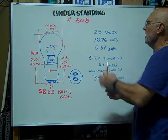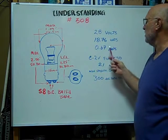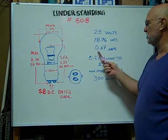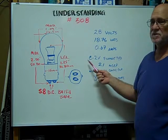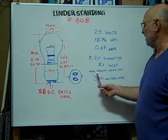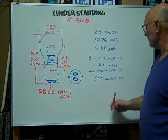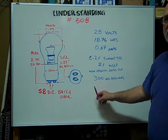The volts are rated at 28 volts. The watts are 18.76. Amps are 0.67. The filament type is a C2V. The mean spherical candle power is 21. The average rated hours are 300 hours.